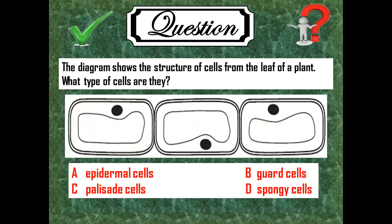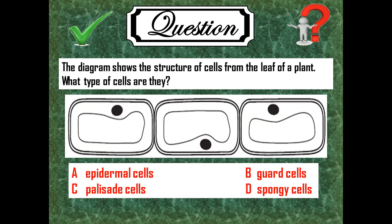The next is the diagram shows the structure of cells from the leaf of a plant. What type of cells are they? So we need to identify the type of cell. These are flaked cells, no chloroplasts, and they are used for protection. Yes, it is upper epidermis or lower epidermis.